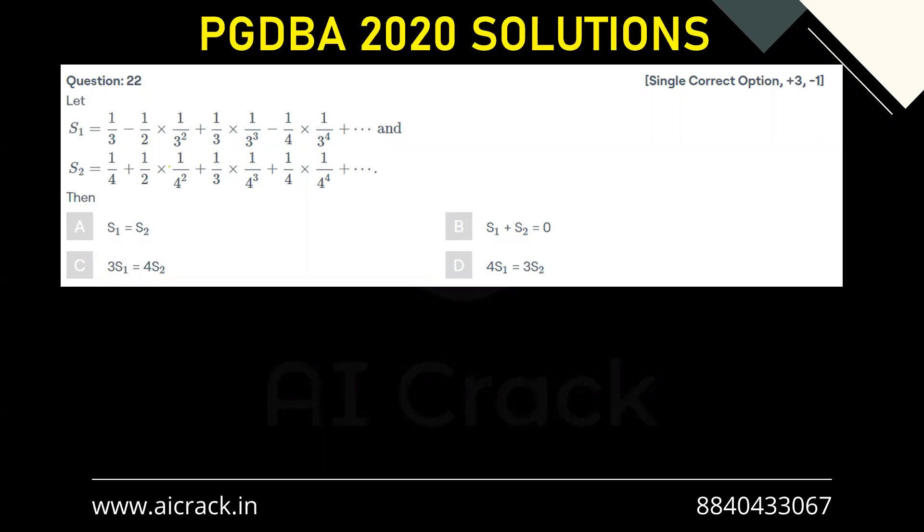Sometimes it can be e raised to x, sometimes it can be sine x, tan x, or ln(1+x). Since we have this kind of power series—3 squared, 3 cubed, 3 to the fourth—that gives me the idea of ln(1+x).